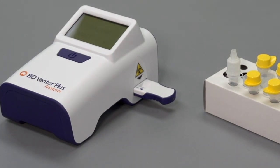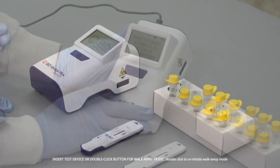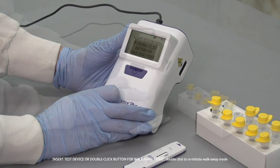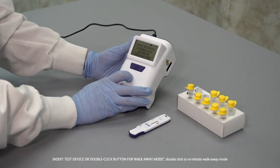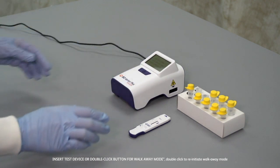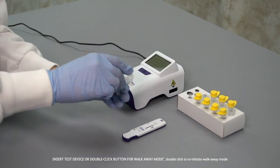We'll do a simulated walk-away test. Power on the analyzer. When Insert Test Device or Double-Click button for walk-away mode appears in the display window, double-click the Power button. You'll be reminded to connect the external power if the analyzer is not already plugged in. This is a requirement for walk-away mode. Make sure the instrument is resting on a level surface.